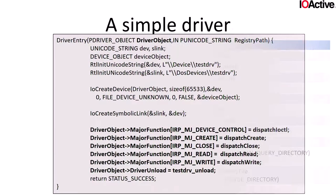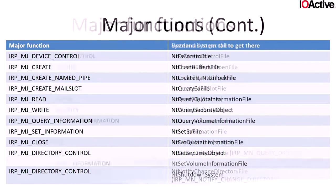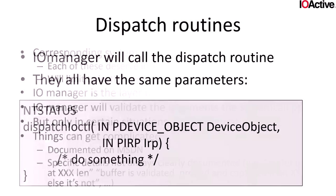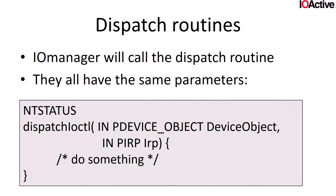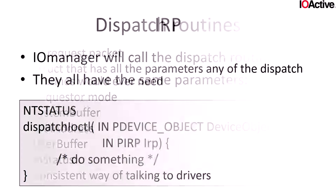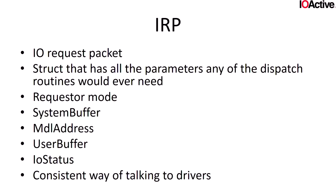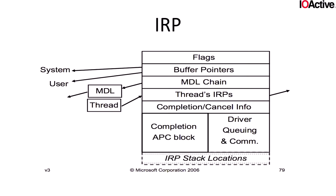For all dispatch functions there are two arguments: the device object and the IRP. The IRP is interesting because it contains all the data packaged from user land that your driver gets access to. This includes data being passed, your IO status, request mode, pointers from user land, system and user pointers, memory descriptor lists, and your IRP stack.